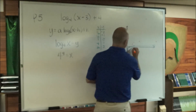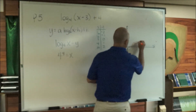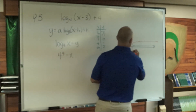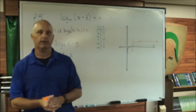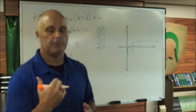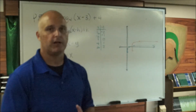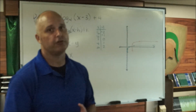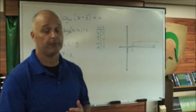After shifting all the points, we get the graph of the translation. All we've done is take all the points for the parent function and move them three units to the right and four units up. That's how you graph a transformation when working in logarithmic form.